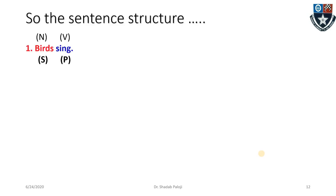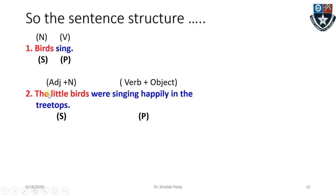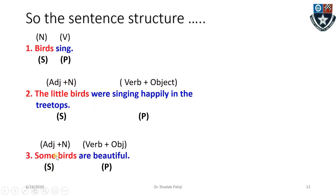So the sentence structure is: noun and verb, subject and predicate. 'Birds sing' — birds is the subject, sing is the verb. 'The little birds were singing happily in the treetops' — 'the little birds' is adjective plus noun as subject, and 'were singing happily in the treetops' is the predicate including verb plus object. 'Some birds are beautiful' — 'some birds' is the subject, 'are beautiful' is the predicate.